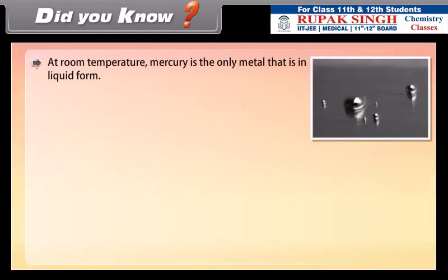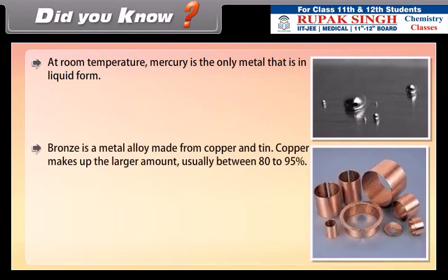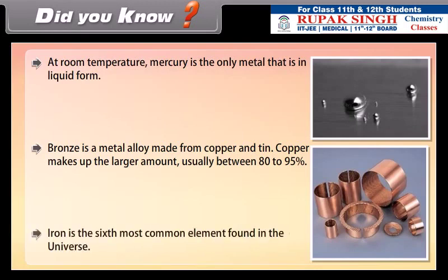Did you know? At room temperature, mercury is the only metal that is in liquid form. Bronze is a metal alloy made from copper and tin. Copper makes up the larger amount, usually between 80-95%. Iron is the sixth most common element found in the universe.